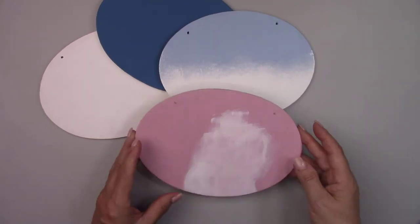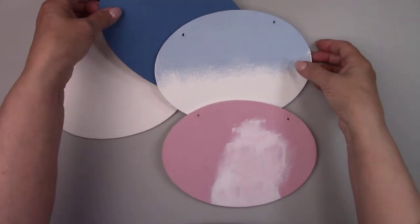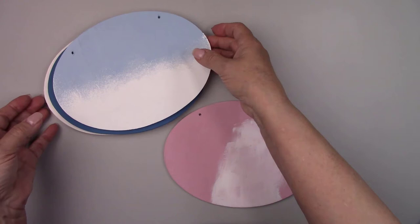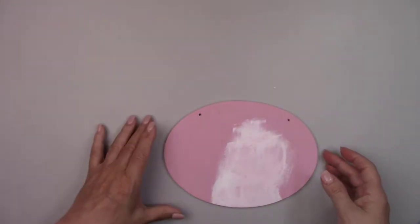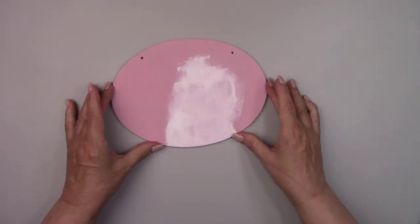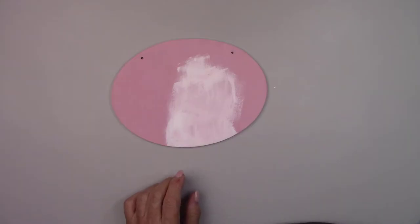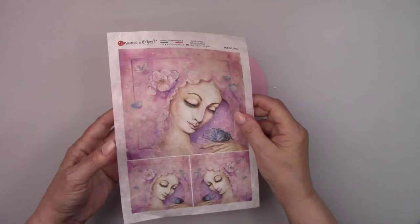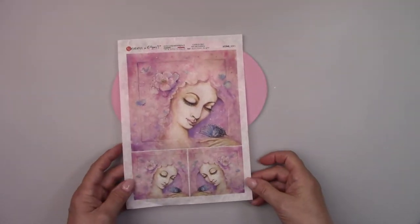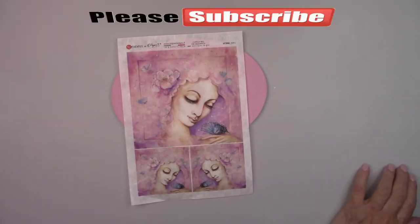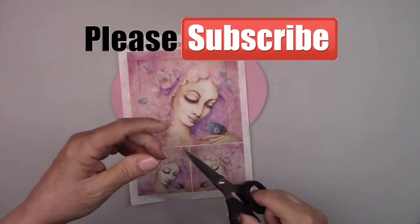I bought some wooden blanks from Dollar Tree and pre-painted them because this tutorial is just about the decoupage methods. I'll be finishing these up as a project on some upcoming videos. I have some great ideas for each one of these. You'll want to subscribe so you don't miss any of them.